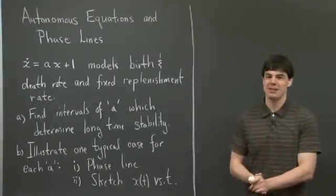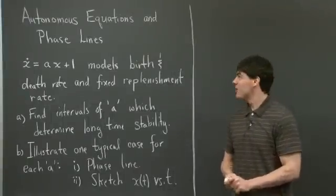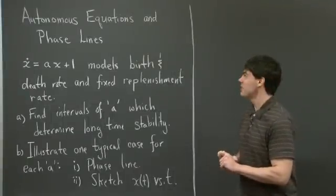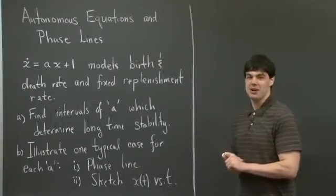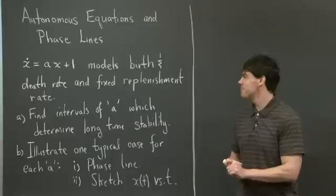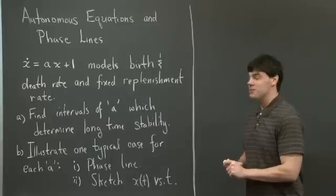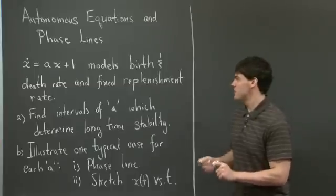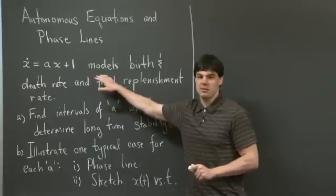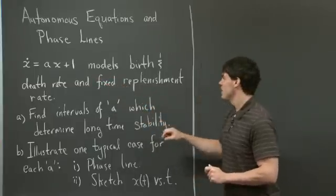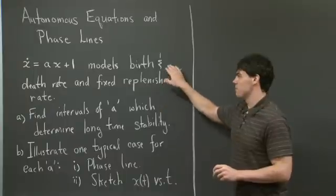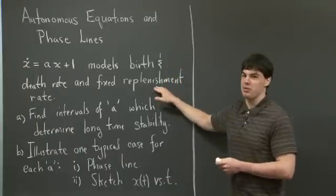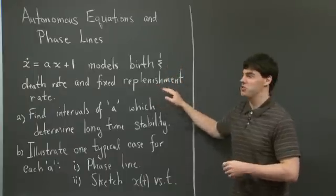Hi everyone, welcome back. In this problem, I'd like to take a look at autonomous equations and phase lines. Specifically, we're going to take a look at the simple equation x dot equals ax plus 1, which models births and death rates and a fixed replenishment rate for a population.